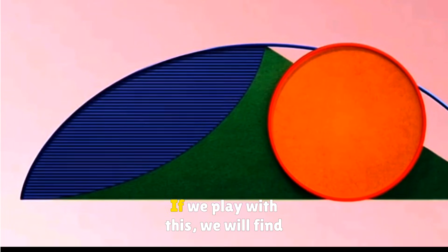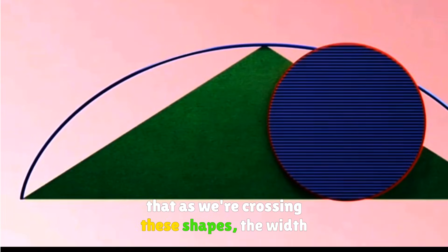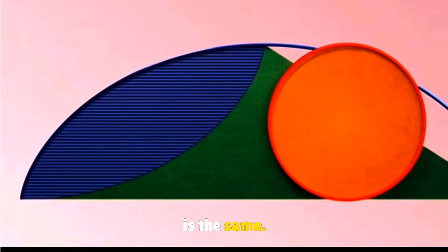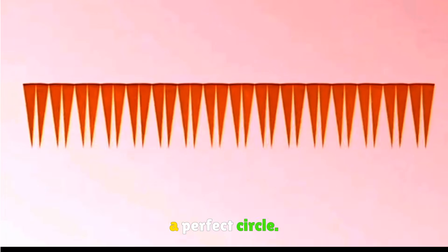These two shapes have a constantly changing width from small to large. If we play with this, we will find that across these shapes the width is the same. If we cut the flat shape, we can move these little pieces together, making it a perfect circle.